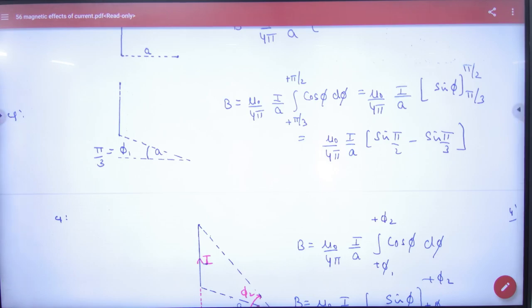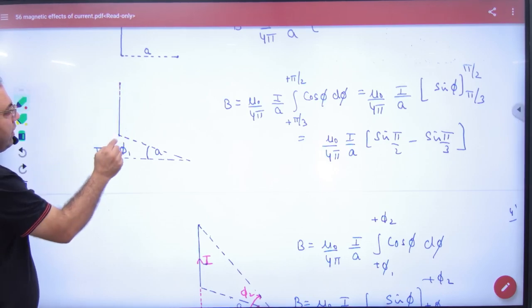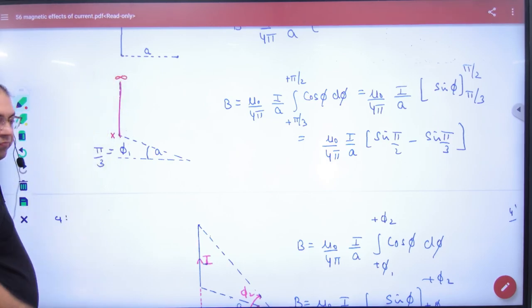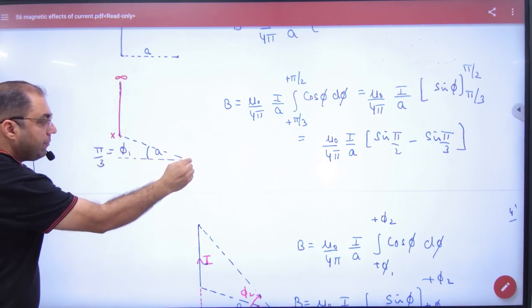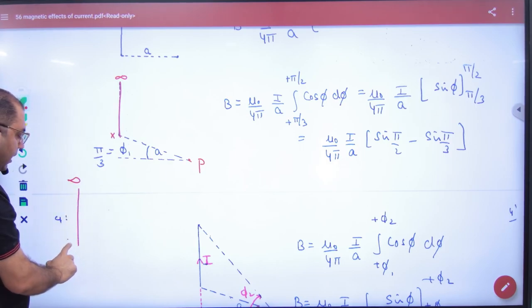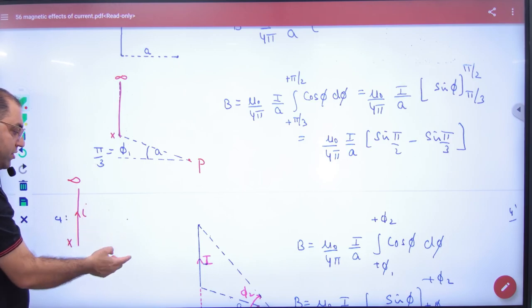Now this is a typical case. If you think this wire starts from here and goes to infinity, infinity to infinity, and your point is here where you need to find B. Now this is a different case, because infinity starts from here and current is here.